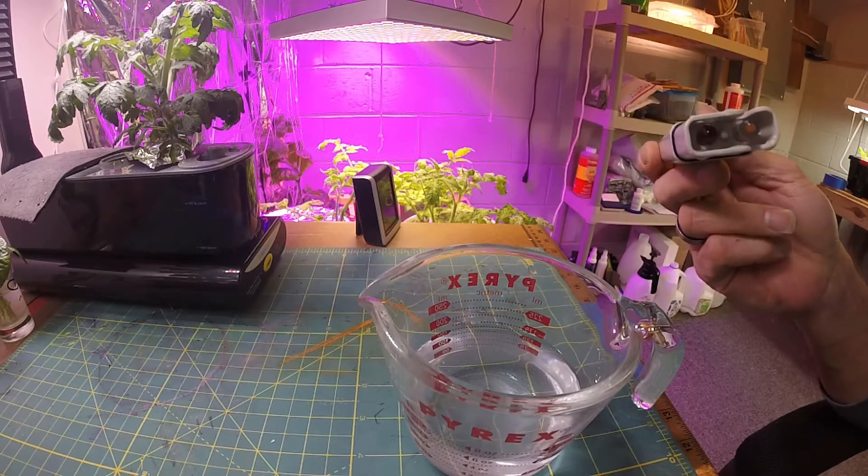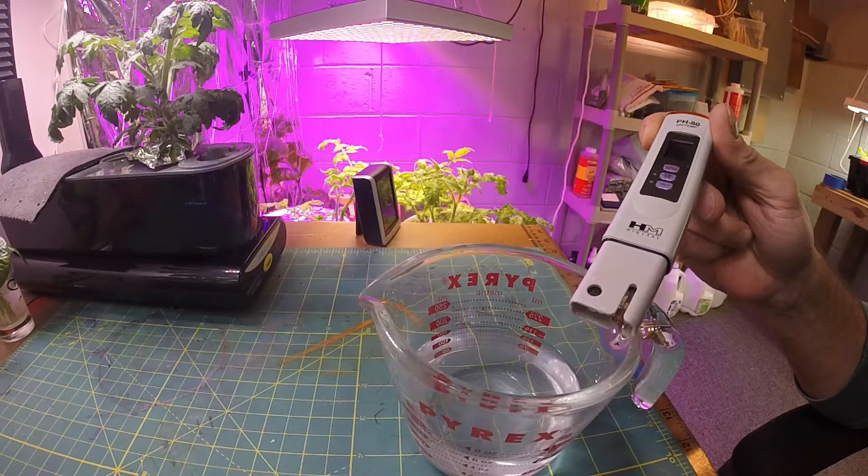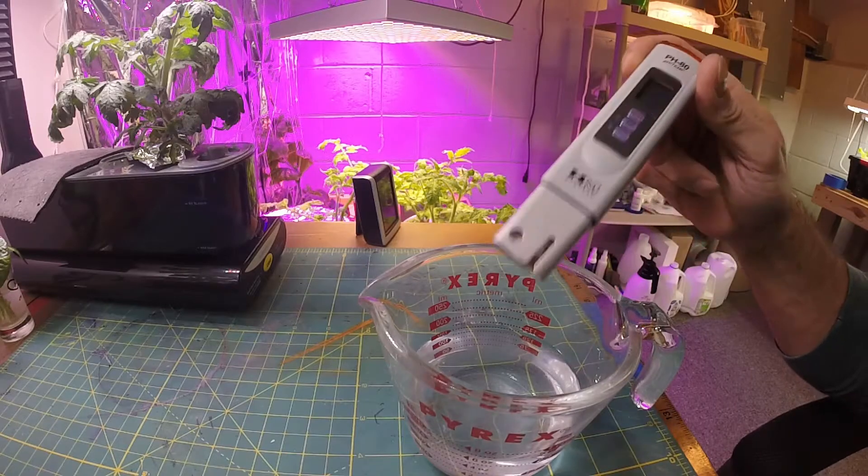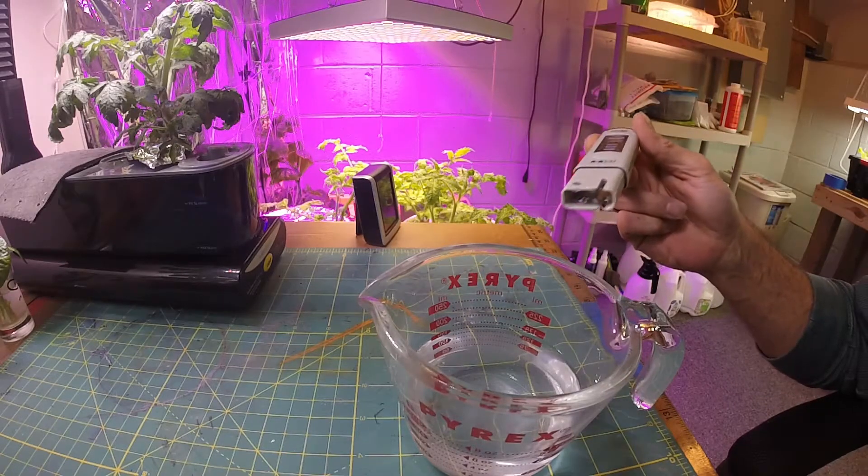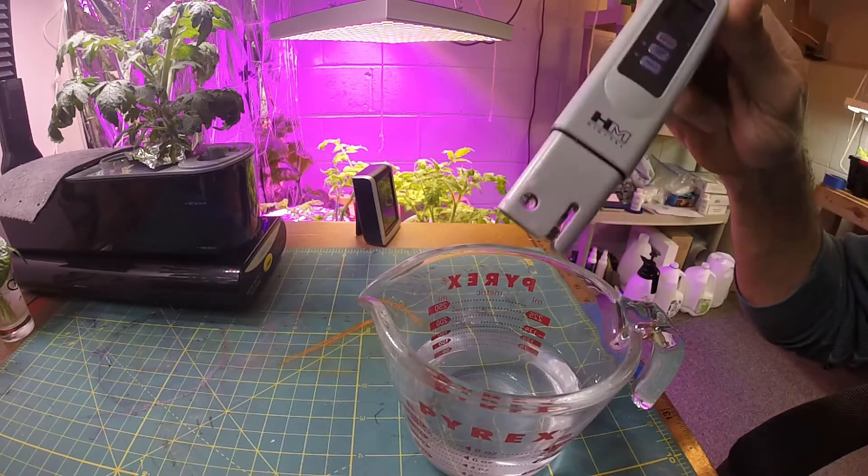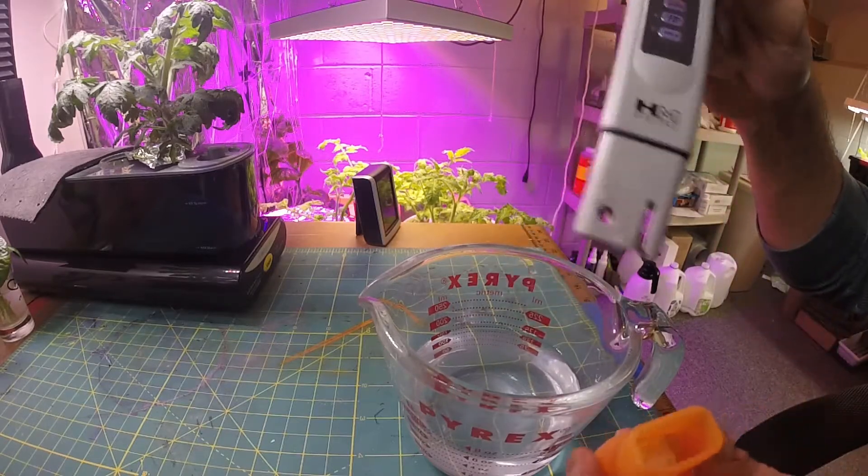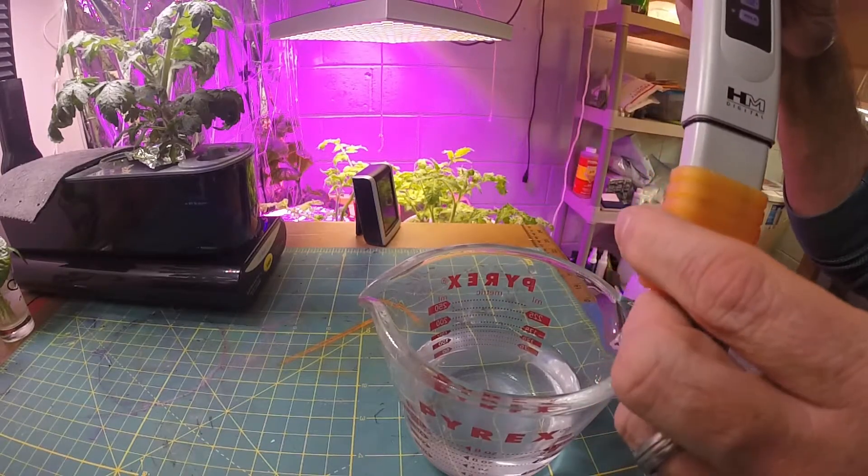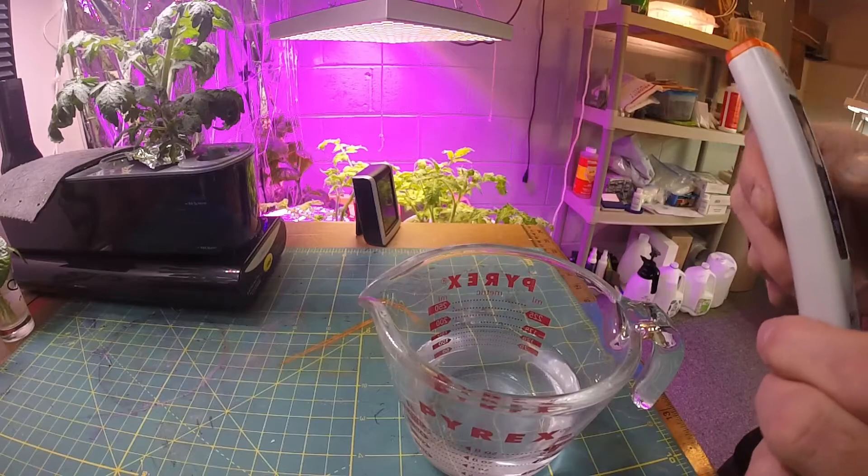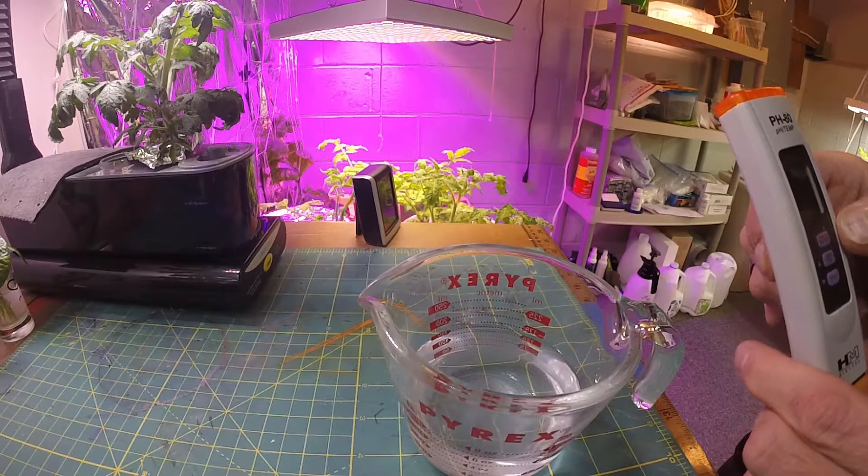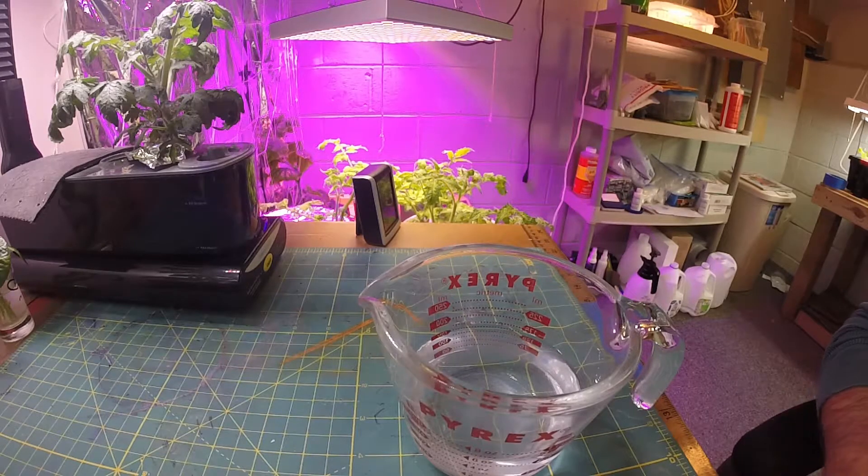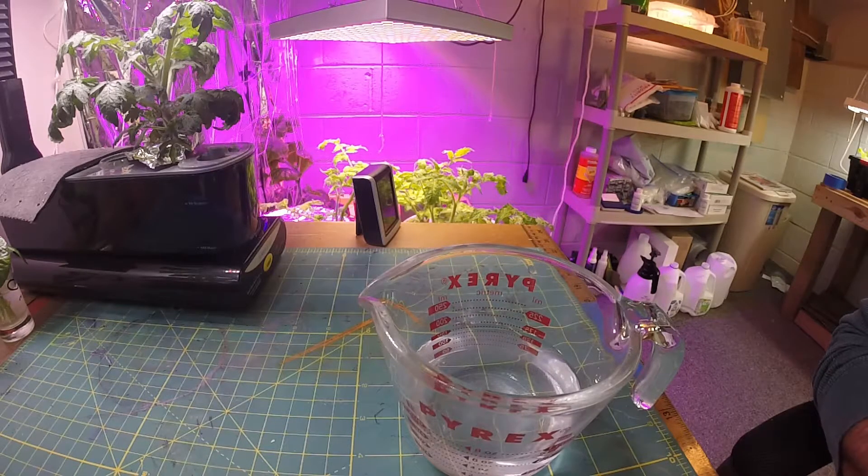All right, so then you're supposed to rinse this off. You can clean this in the buffer solution. I guess you really wouldn't have to clean this off right now because I didn't actually put it in anything with nutrients or anything, but basically what I'll do is rinse it off in the buffer solution. And then this will go right back into the cap which has that foam in the bottom, and I'll power that off. Okay, so I just wanted to quickly show you the meter, check the calibration and stuff.